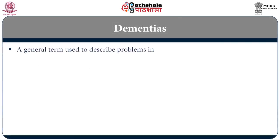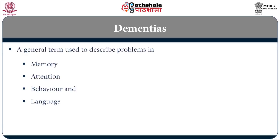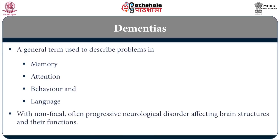Dementia is a very general term. Dementia can affect memory, attention, behavior, and language. A neurologist diagnoses somebody as having dementia when there is a non-focal progressive neurological disorder affecting brain structures and their function.